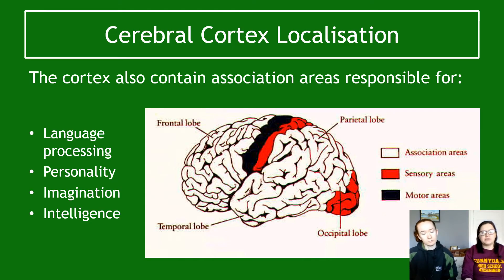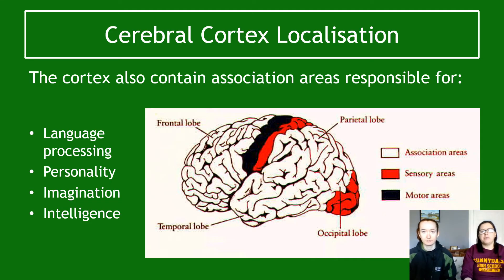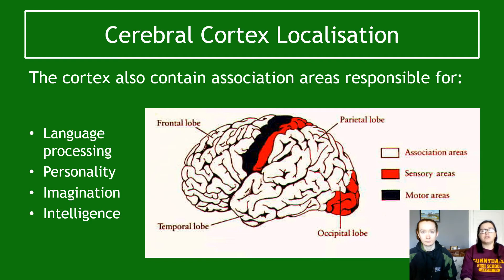What association areas means is that when we look at CT scans and have people do particular tasks like processing language, a certain area of their brain lights up. When we have them do stuff that correlates with personality-type responses, particular areas start lighting up. These are areas we associate in the brain with being linked to that function.